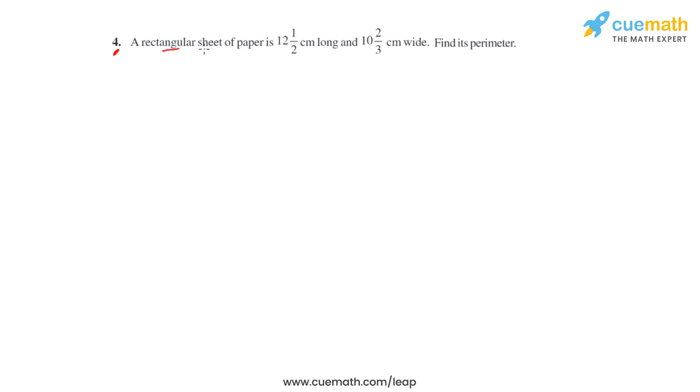Question 4 says that a rectangular sheet of paper, which is 12½ cm long and 10⅔ cm wide, we have to find its perimeter. So to start with, we'll find the length of the sheet as an improper fraction and for that we'll convert the mixed fraction which is 12½ cm into improper.